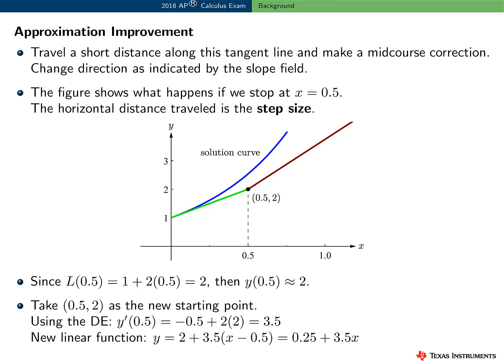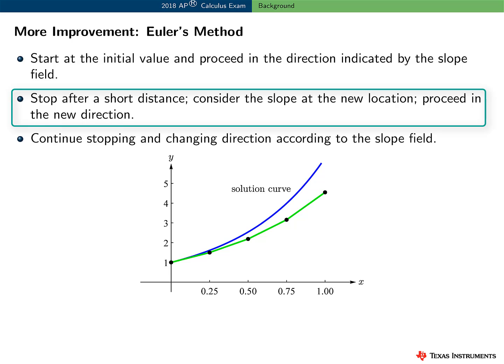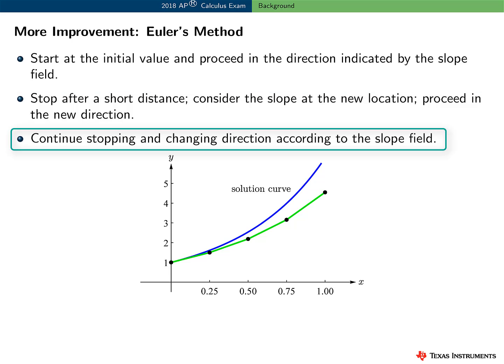You can probably already see that if we decrease the step size, it seems reasonable that this procedure, Euler's method, would produce a better approximation. In general, Euler's method says to start at a point given by the initial value and proceed in the direction indicated by the slope field. Stop after a short distance, look at the slope at the new location, and proceed in a new direction. Continue stopping and changing or adjusting direction according to the slope field.